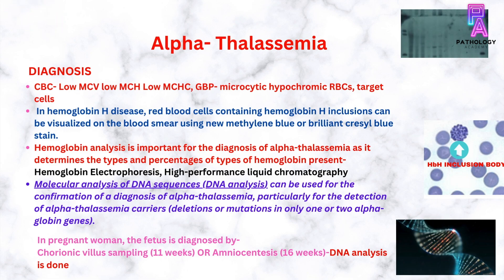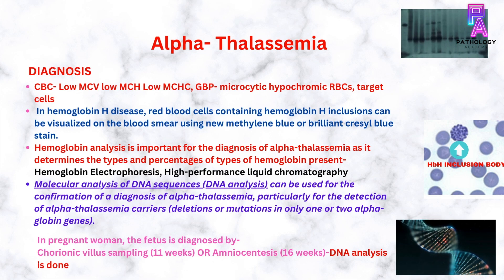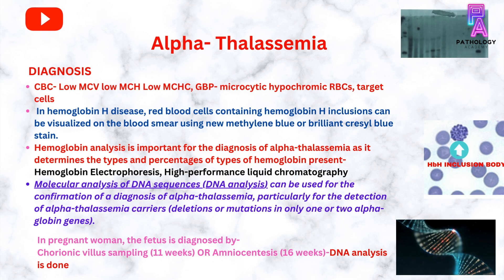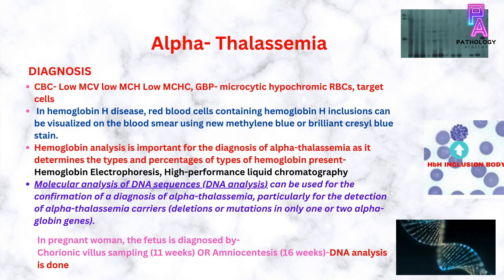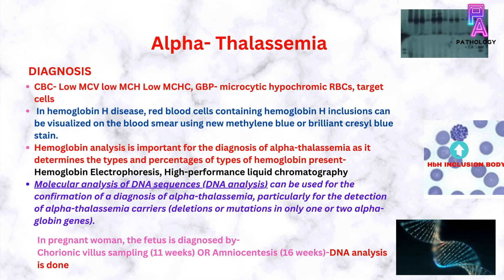Hemoglobin analysis can be done by hemoglobin electrophoresis and high performance liquid chromatography. Molecular analysis of DNA sequences can be used for confirmation of a diagnosis of alpha thalassemia, particularly for detection of alpha thalassemia carriers in whom there are only one or two mutations in the alpha gene. Pregnant women can be screened and their fetus can be diagnosed by chorionic villus sampling at the 11th week or amniocentesis at the 16th week of pregnancy, in which the fetal DNA is analyzed for alpha thalassemia.